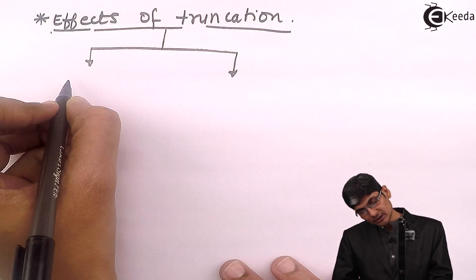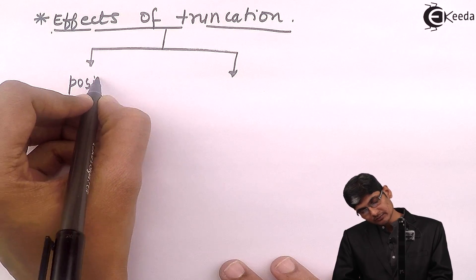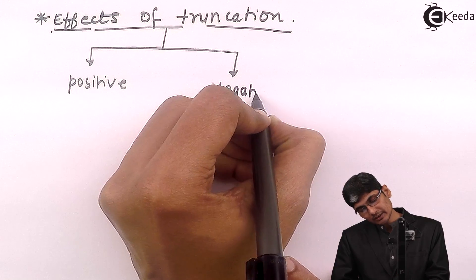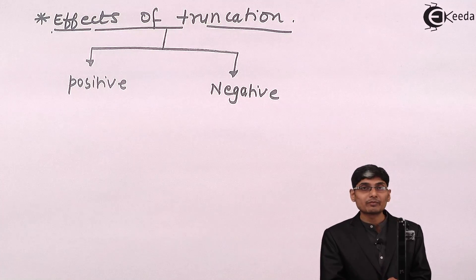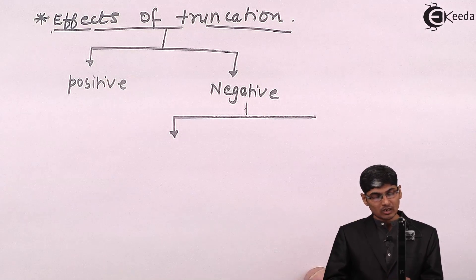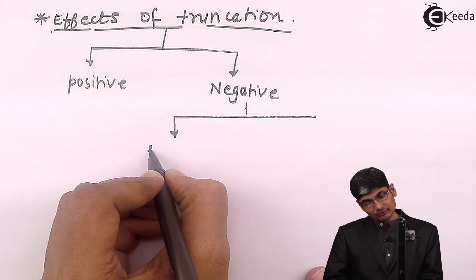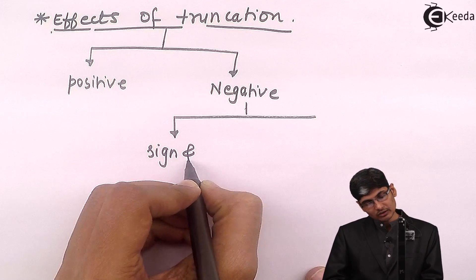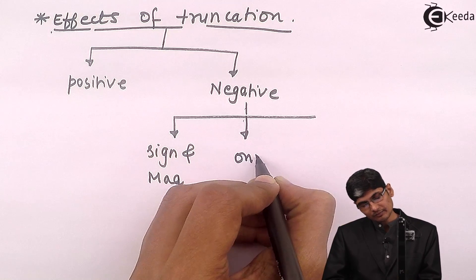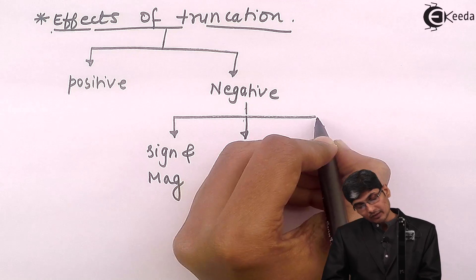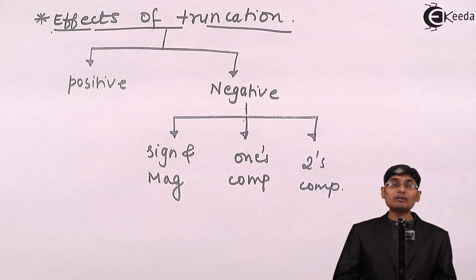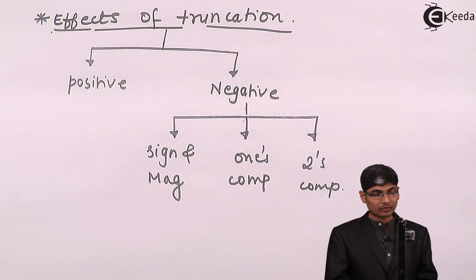We normally divide the effect into two subcategories: the effect of truncation on positive numbers, and the effect on negative numbers separately. For negative numbers, the effect is further divided into three parts: sign and magnitude, one's complement, and two's complement.